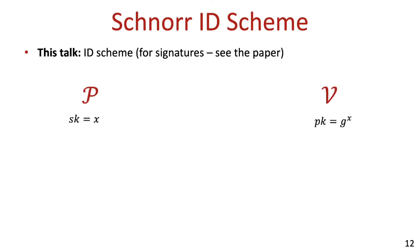The setting is that we have a prover P who wants to convince a verifier V that she knows the discrete log of some publicly known group element. We assume some publicly known and fixed group of order p, which is generated by some fixed generator g. V gets as input a public key which is a group element, and in an honest execution P gets as input the secret key x, which is the discrete log of this group element with respect to the generator g. Schnorr's protocol proceeds in three rounds.